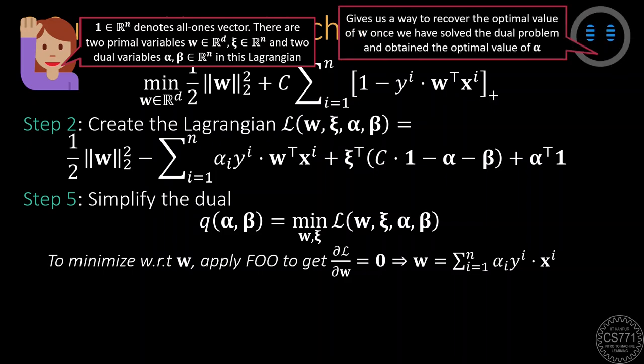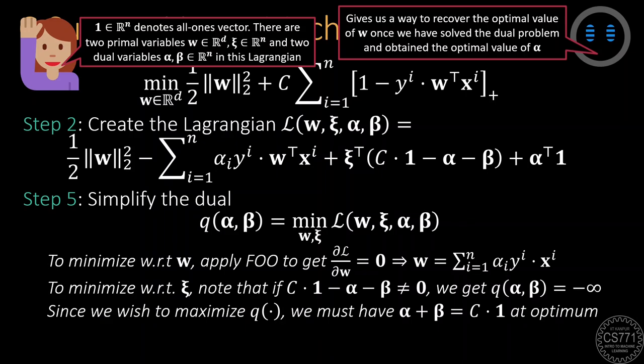This expression will allow us to recover the optimal value of W once we have obtained the optimal value of alpha by solving the dual problem. Minimizing the Lagrangian with respect to the second primal variable, that is Xi, requires a bit more care. Notice that the Lagrangian is a linear function of Xi, since the only term that contains Xi looks like Xi i transpose the vector C times the all ones vector minus alpha minus beta. As we have seen before, unless this linear term is identically zero everywhere, minimizing with respect to Xi will yield a negatively infinite value, which is useless since the dual problem seeks to maximize the Q function with respect to the dual variables. Thus, at the optimum, we must have alpha plus beta equals the all C vector.